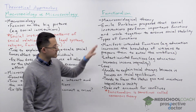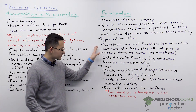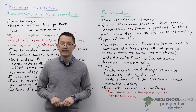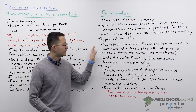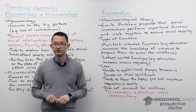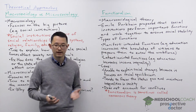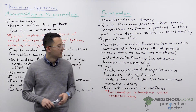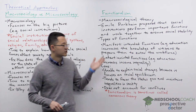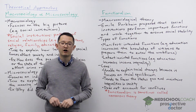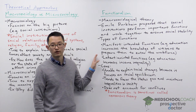In terms of functions, there are two different types: manifest functions and latent functions. Manifest functions are the intended functions of social institutions. So if we're considering education as an example of a social institution, one of the manifest functions of education is to increase the knowledge of citizens to prepare them to enter the workforce.